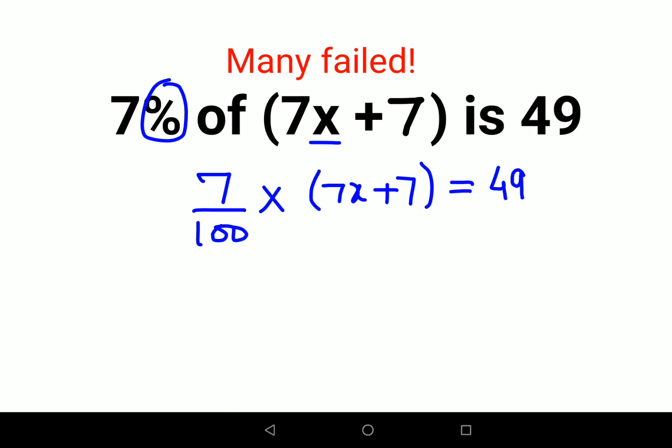Now what we can do first is we can take 7 common from this bracket. So what happens is 7 into 7, and we have x plus 1 upon 100 equals to 49.